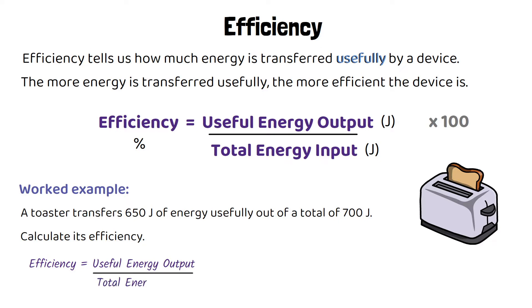Efficiency equals useful energy output over total energy input. Our useful energy output is 650 and our total energy input is 700. Putting that into the calculator gives us an efficiency of 0.93. If you want efficiency as a percentage, multiply by 100 to get 93%. Both answers are correct.